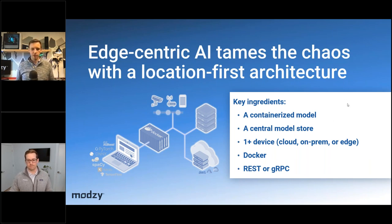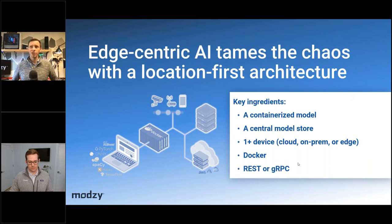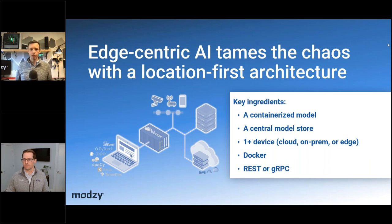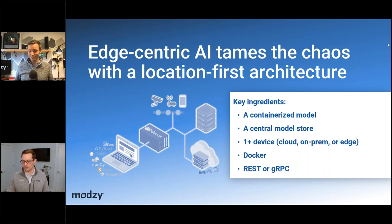You'll need one or more devices, and importantly this isn't limited to small single-board computers — it can include cloud and on-premise resources. This is a great way to handle multi-cloud compute challenges where workloads span Google, Amazon, and Azure. You also need a container runtime — we're big fans of Docker, though containerd and others exist — and some kind of API, either REST or gRPC. gRPC is fantastic for high-speed low-latency responses but less user-friendly, while REST is great when latency isn't critical.